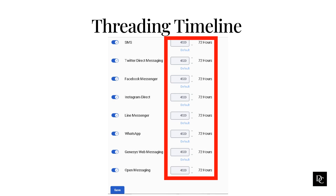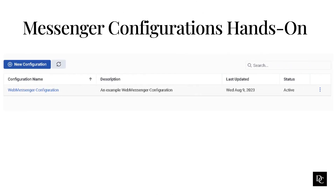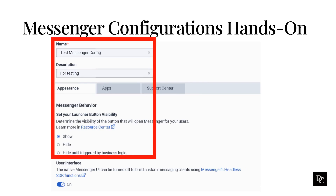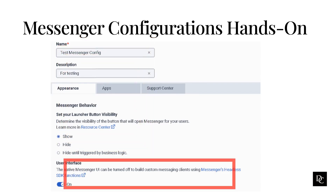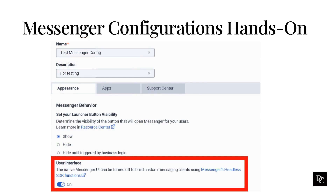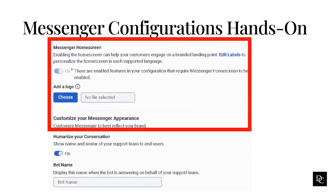Next, we are going to dig deeper into messaging and walk through Messenger configurations. Messaging improves the customer experience when they visit your website. Before you use web messaging, configure it in Genesis Cloud. Under Message, click Messenger Configurations, then click New Configuration. Enter a name and description. Under the Appearance tab, set your launcher visibility. Under User Interface, leave on if deploying the Messenger native interface, or turn on if building your own messaging client. Under Messenger Home Screen, select whether you want the messenger to display the home screen. When you turn on this feature, configure the brand logo, customize predefined messenger labels, and enable the Knowledge app.